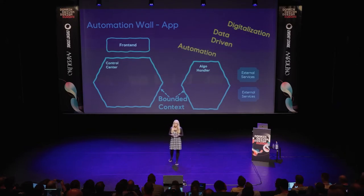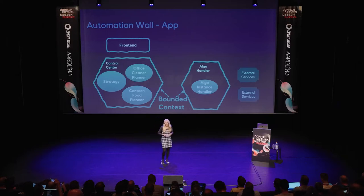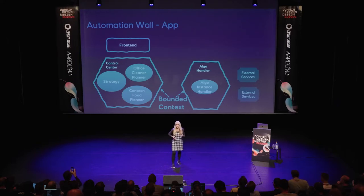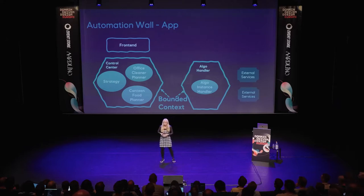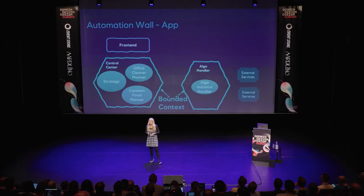So we need to understand the challenges with distributed solutions. In this application, the control center serves the front end. It has an aggregate related to digital strategies — starting and stopping these. There are two different aggregates related to two different business areas: one is the office cleaner planner, and the other takes care of canteen stuff, serving different food to get it as cheap and as good quality as possible. And then we have the algo handler that executes on these digital strategies by starting and stopping algos on external services.